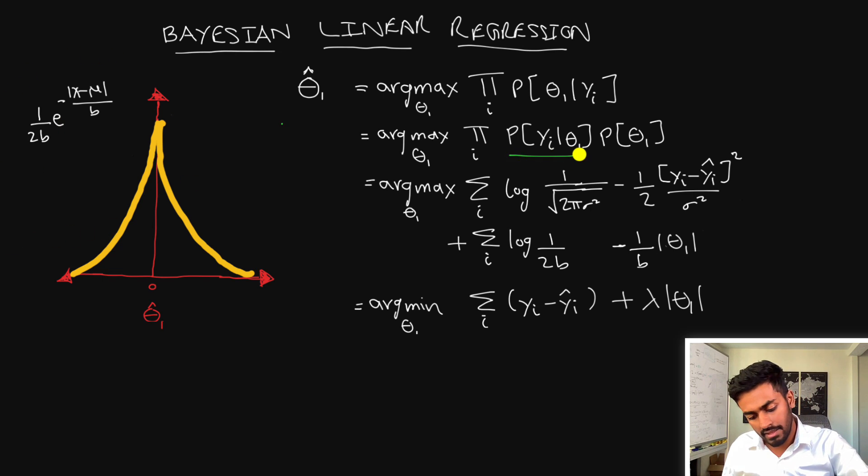And so we have the likelihood term which is this term over here. And then we also have a prior term which will be this term over here. And doing the simplification we end up with the exact same lasso penalty here. So I hope this actually gives you a good intuition from a Bayesian standpoint of how we're looking at the same problem and you can actually arrive at the same solution.